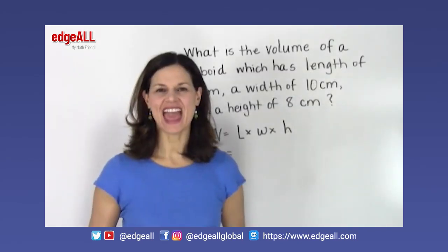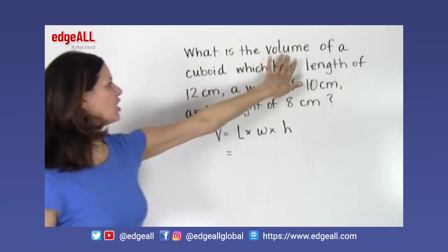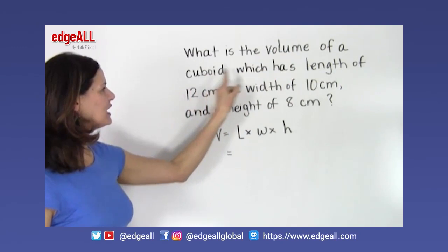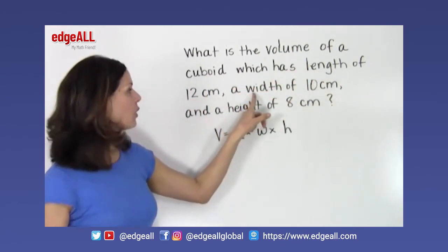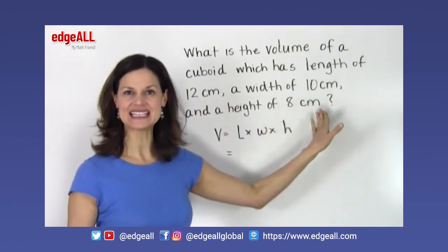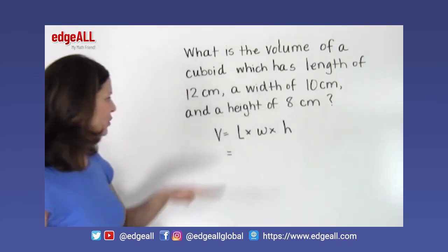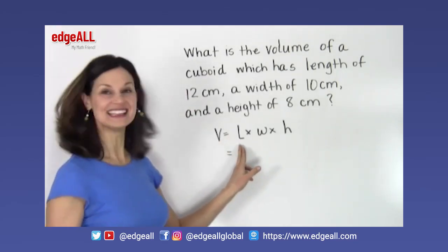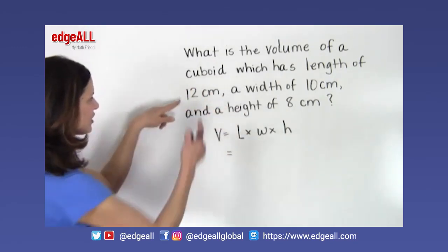Let's look at another example. This question asks us, what is the volume of a cuboid which has the length of 12 centimeters, a width of 10 centimeters, and a height of 8 centimeters? So using our equation for finding the volume, we are simply going to multiply the length times the width times the height.